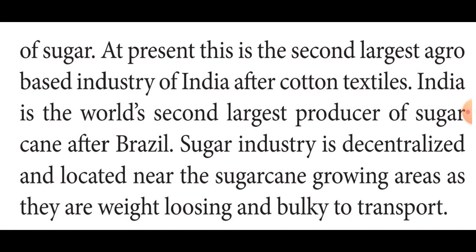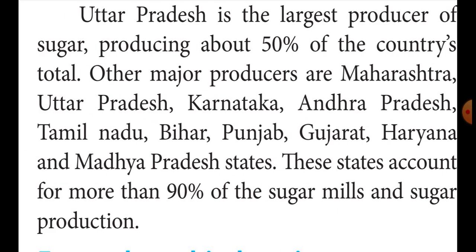Other sugar-producing states include Maharashtra, Karnataka, Andhra Pradesh, Tamil Nadu, Bihar, Punjab, Gujarat, Haryana, and Madhya Pradesh. Together with Uttar Pradesh, these states account for 90% of sugar production and 90% of sugar mills in India.